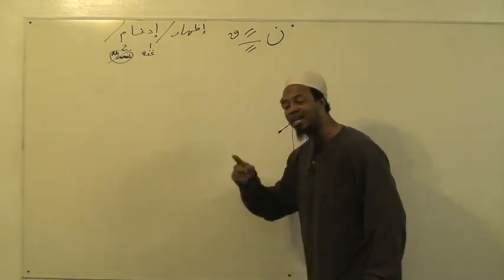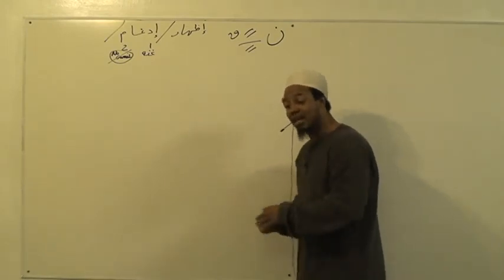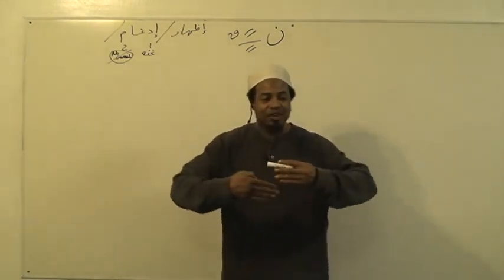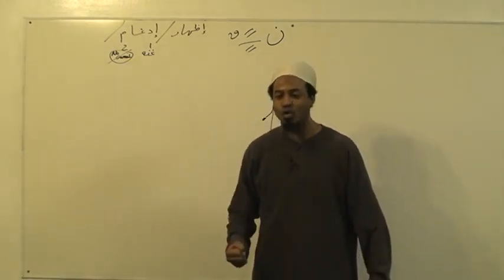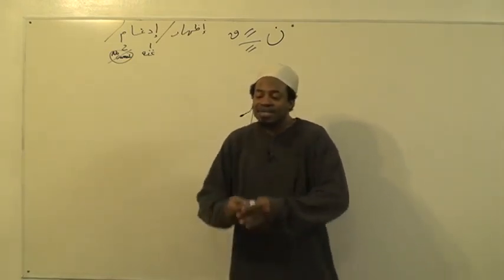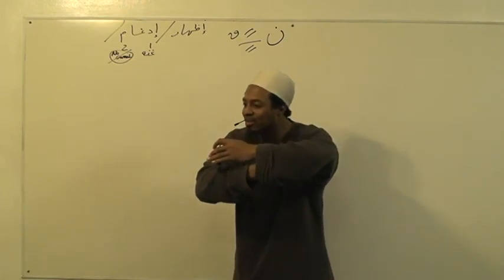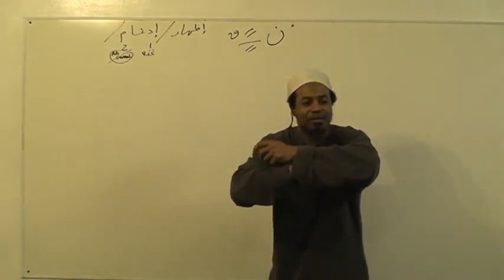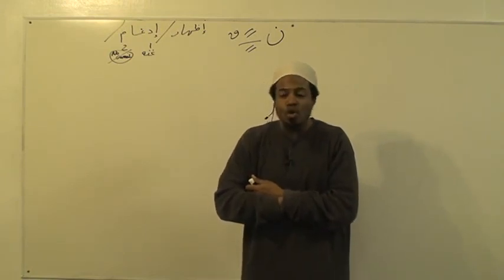لَكِنَّهَا قِسْمَانِ قِسْمٌ يُدْغَامَا — however, it is of two types. One part has Idgham bi Gunnah. What is Idgham? Idgham is دَخَلَ شَيْءٌ فِي شَيْءٍ — dakhla shay fi shay. Even if you don't know what that means, learn it. It means to enter something into something else. See how I entered my hand into my sleeve? I made Idgham of my hand in my sleeve — I entered it until it became one.